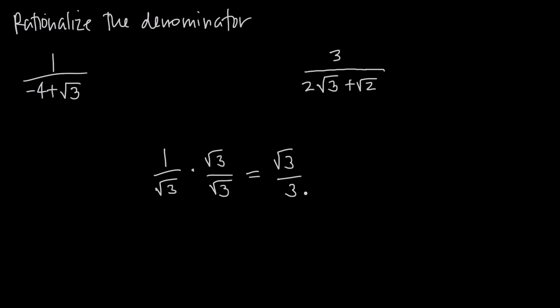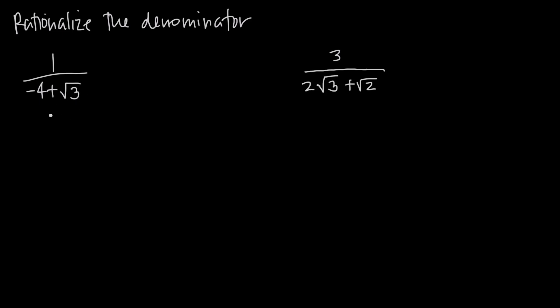Now you can see we've removed the square root from the denominator — that was called rationalizing the denominator. But how do we do this if we have a fraction with more than just a single square root in it? In this case, we have negative 4 plus the square root of 3.